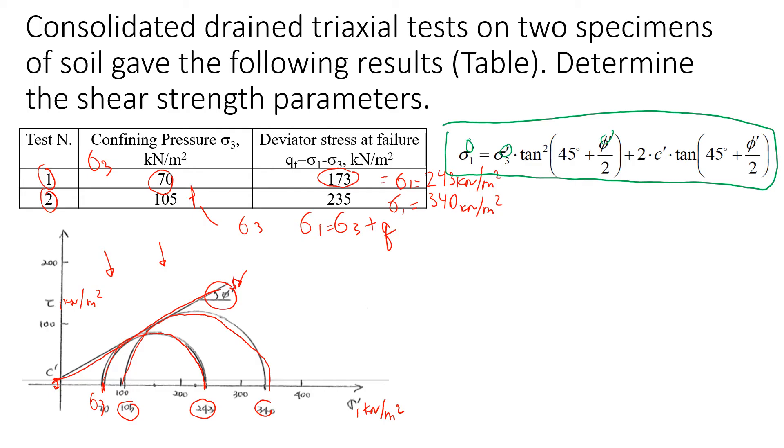Let's do it for the first one. We're going to write that sigma 1 at failure is 243 equal to sigma 3, which is 70, times tangent squared of (45 plus phi divided by 2), plus 2 times cohesion times tangent of (45 degrees plus friction angle divided by 2).